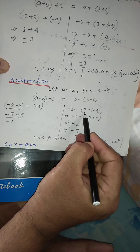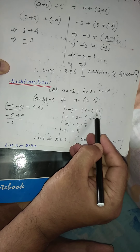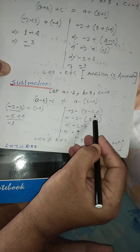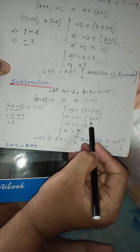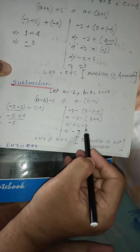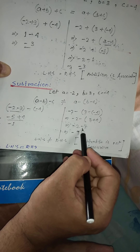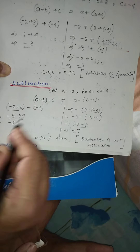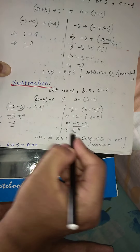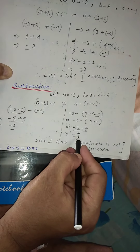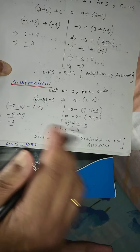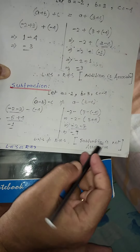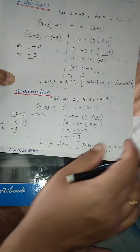For the RHS: in place of a, minus 2; in place of b, 3; minus in place of c, minus 4. We solve the bracket: minus minus is plus, so 3 plus 4 is 7. Finally, minus 2 minus 7 is minus 9. Carefully observe — the answers are not matching. So we write LHS is not equal to RHS: subtraction is not associative for integers.